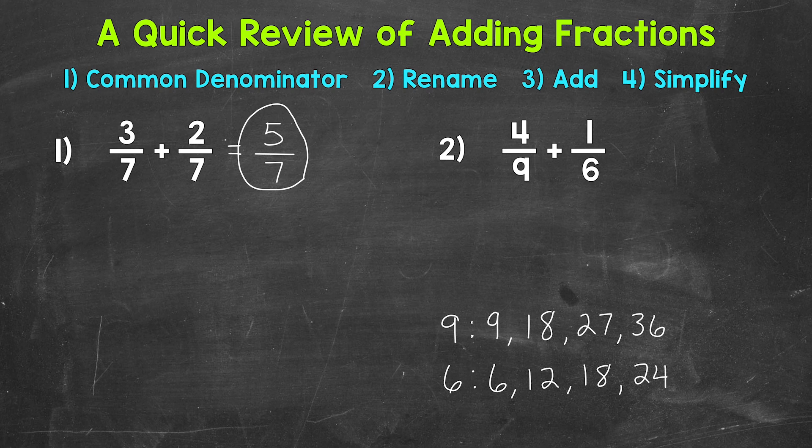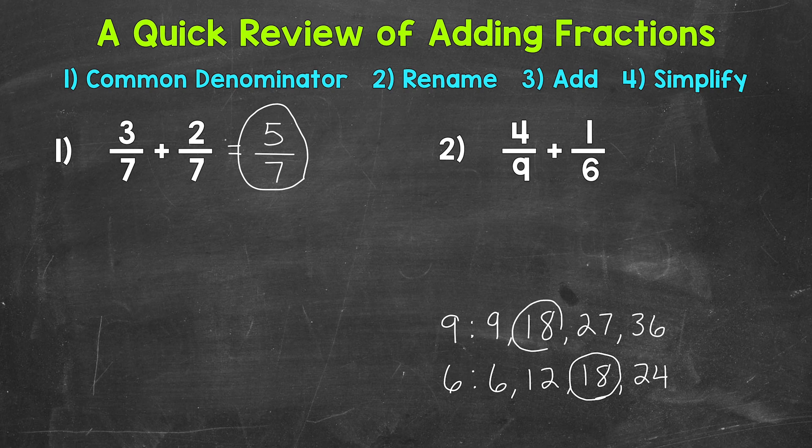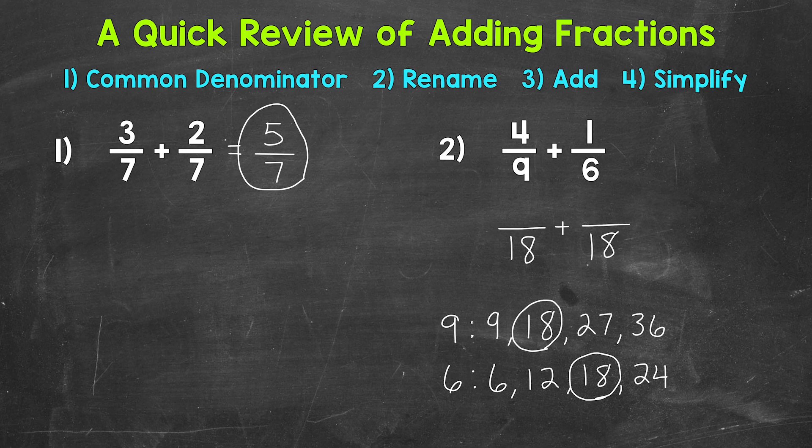It looks like we have 18 in common here. And that's going to be our least common multiple. We're going to use that for our common denominator. So I'm going to rename these fractions underneath the original problem with that denominator of 18. So when we rename, we're going to use equivalent fractions. So we're not changing the value of the problem at all.